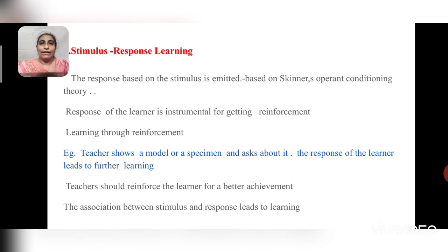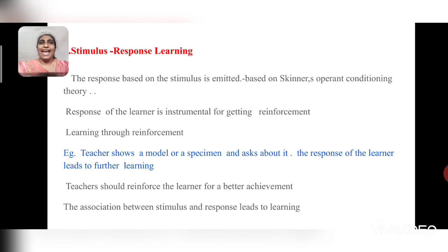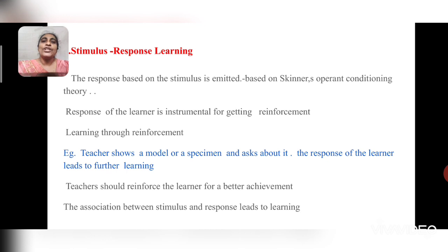In the classroom, the teacher shows a model or specimen and asks about it; when students respond, further learning takes place. For example, keeping a plant in a dark room is a stimulus — the plant gets destroyed. If you keep it in sunlight, the change is evident. Teachers should realize that better learning takes place only when there is reinforcement and the stimulus-response bond is strengthened.